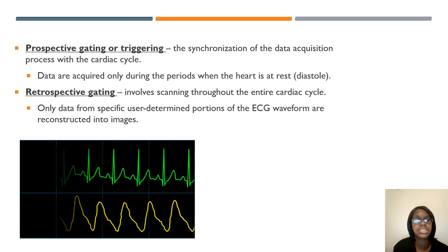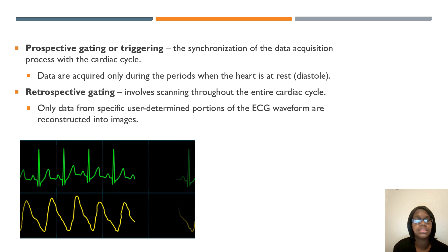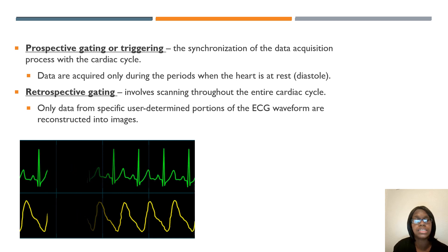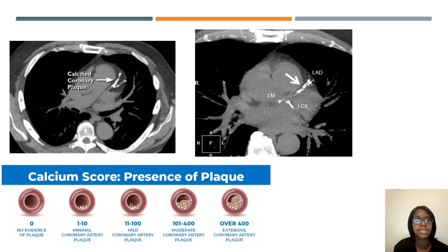You also have ECG gating — make sure you know these terms and how it works when performing a CT heart scan. You also have calcium scoring. Know the numbers and the scoring range. If a patient asks whether they have a lot of calcium buildup, do not tell them — always refer them to the radiologist. Know how to label and annotate the calcified arteries, because in most places the machine will not do it for you.